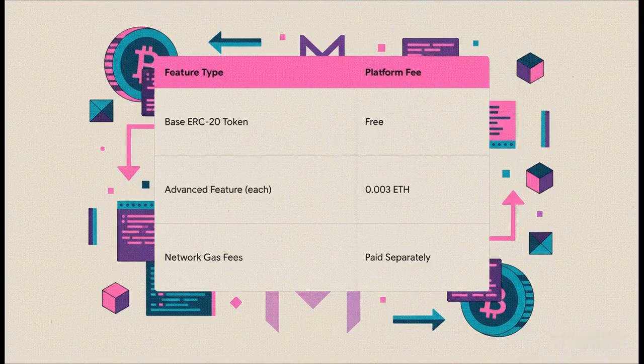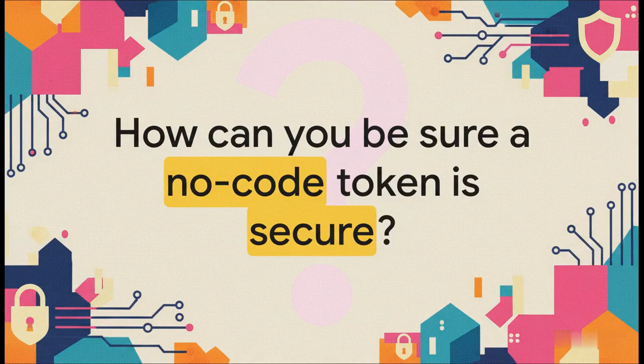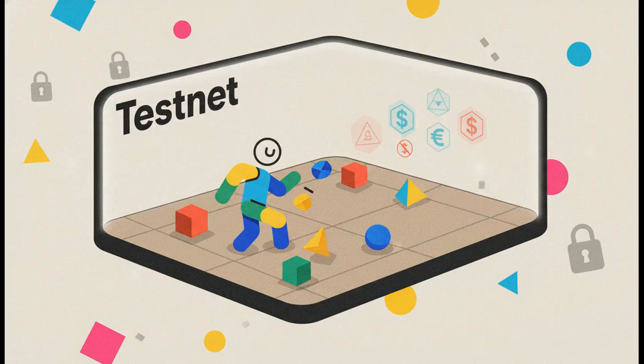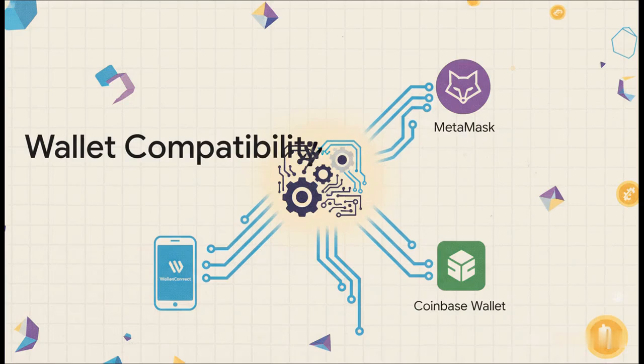So how much does this cost? The pricing is super clear — you only pay for the advanced features you use. But is this actually safe? That's a huge question. The best tools have safety built right in. You've got multiple layers of safety: audited contracts, a free testnet, and automatic code verification. That testnet-first approach is key — it lets you test everything out without spending any real money. And it all works with the wallets you already use, like MetaMask, Coinbase Wallet, and others.